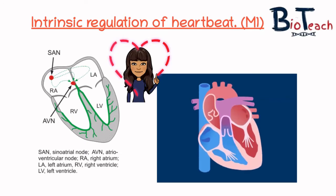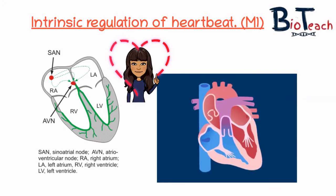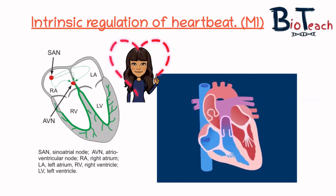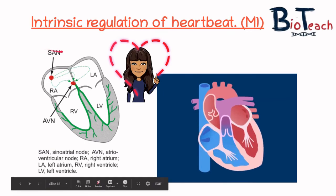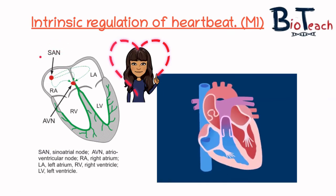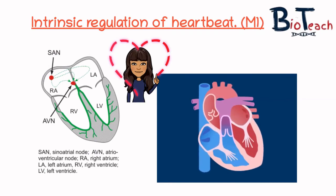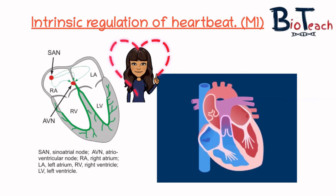The first thing I'm going to talk about is the intrinsic control of the heartbeat. The word intrinsic means internally controlled or influenced internally. The animation on the right shows how the heart beats, and key components are labelled on the left. The sinoatrial node, or SAN, gives the heart its amazing property of being myogenic — meaning it can contract on its own without the need for any external nervous stimulation. That's quite a key word to be aware of.